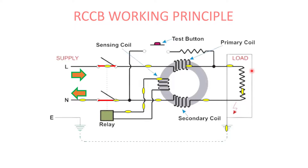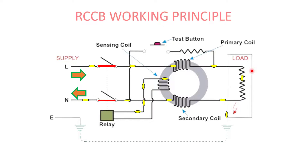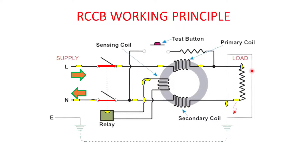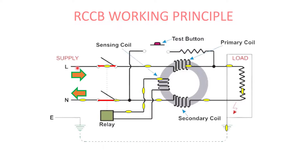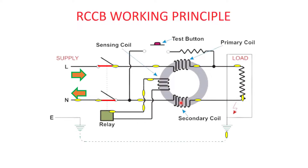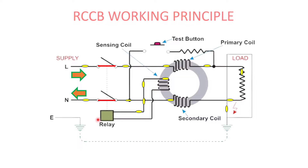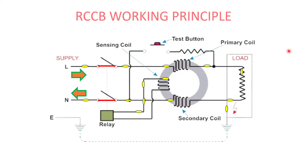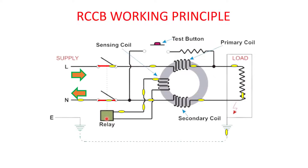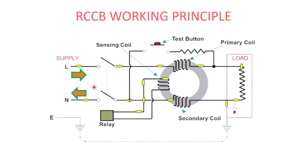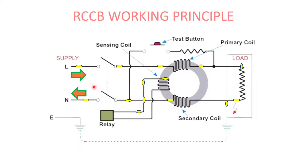If a ground fault occurs or a human body comes into contact with the circuit, current flows through the body or object to the ground. This causes an imbalance in the magnetic fields — the primary coil's magnetic field is higher while the secondary coil has a leakage, so the opposing effect is lost. An induced EMF is produced in the sensing coil, which triggers the relay attached to it. The relay is an electromechanical switch — when current passes through it, it triggers the mechanism and opens the circuit. Once the ground fault occurs, the relay energizes and causes the RCCB to trip, breaking the circuit.